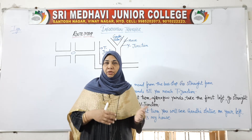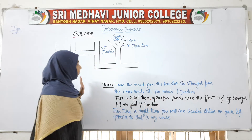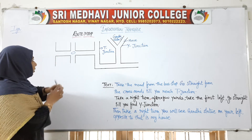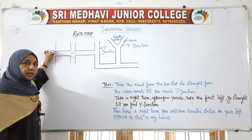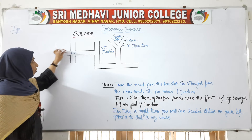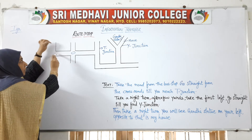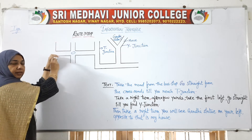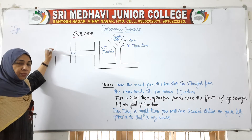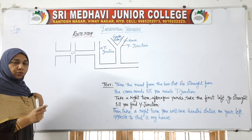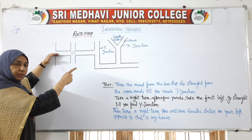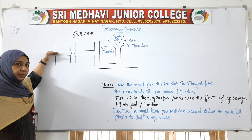Here I have drawn one roadmap for you. When you draw the roadmap, think that you are standing here, facing in this direction and walking forward. Obviously, if you are standing here, your left is this side and your right is this side. Whenever you draw the roadmap, imagine yourself facing towards the direction being given.